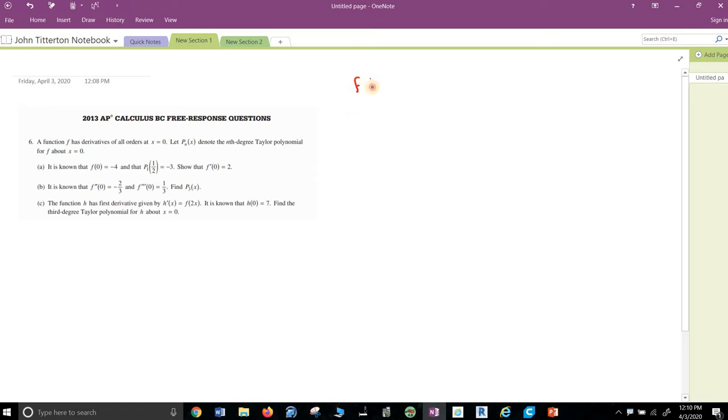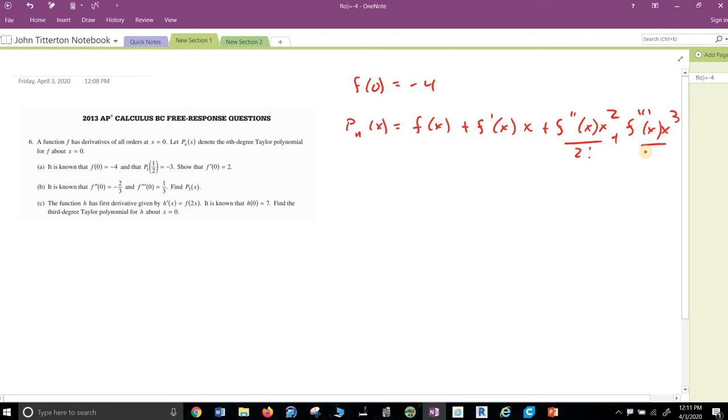They tell me off the bat f(0) equals negative four. And then they give me this, there's just some random function. They give me virtually no information in the setup to the problem. So we've got to go back to an infinite series. P_n of x is f(x) plus f'(x) x squared over two factorial plus f'''(x) x to the third over three factorial plus dot dot dot. And they say it's known that f(0) equals negative four. If I plug in zero, you're just going to get f(0) because everything else is zero. So therefore, that's your first term. So that's going to be negative four.